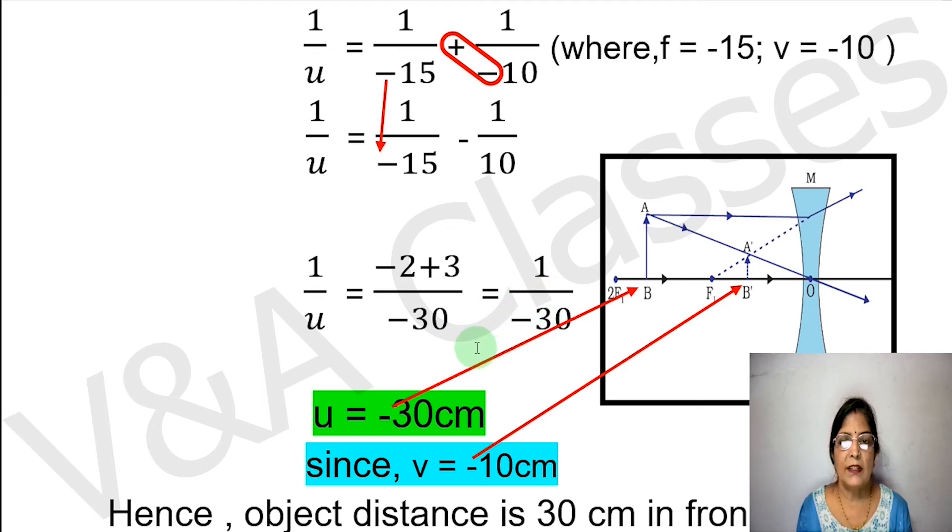This 1/minus 30 equals 1/u. So u will be minus 30. Now the unit is centimeters, so the value is minus 30 cm.